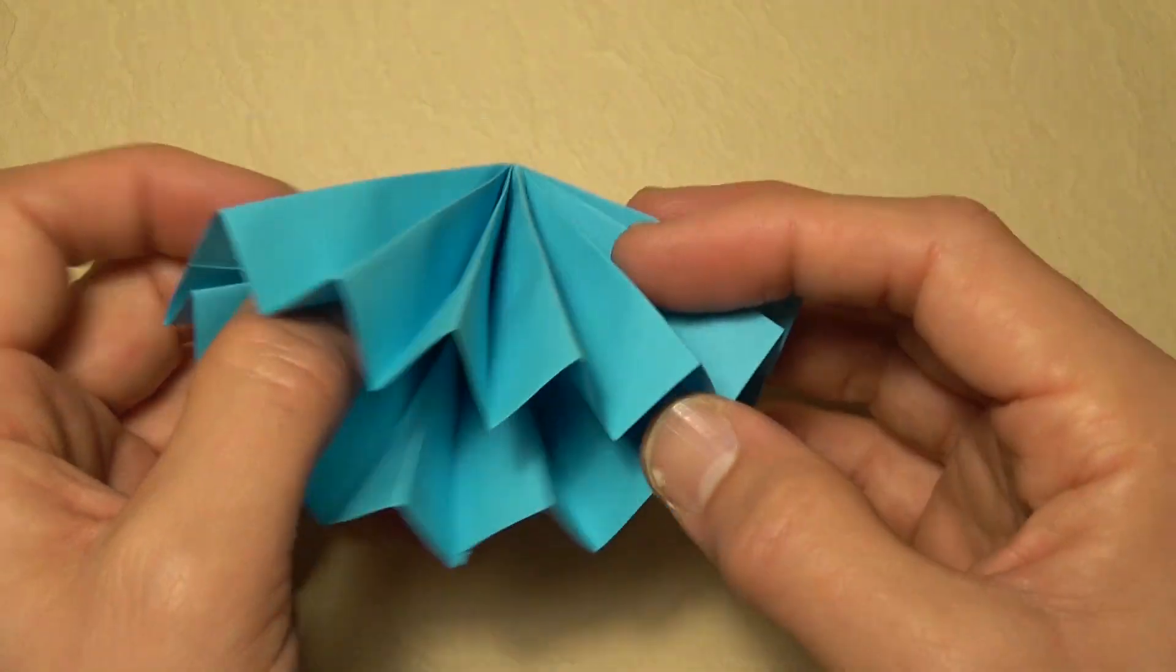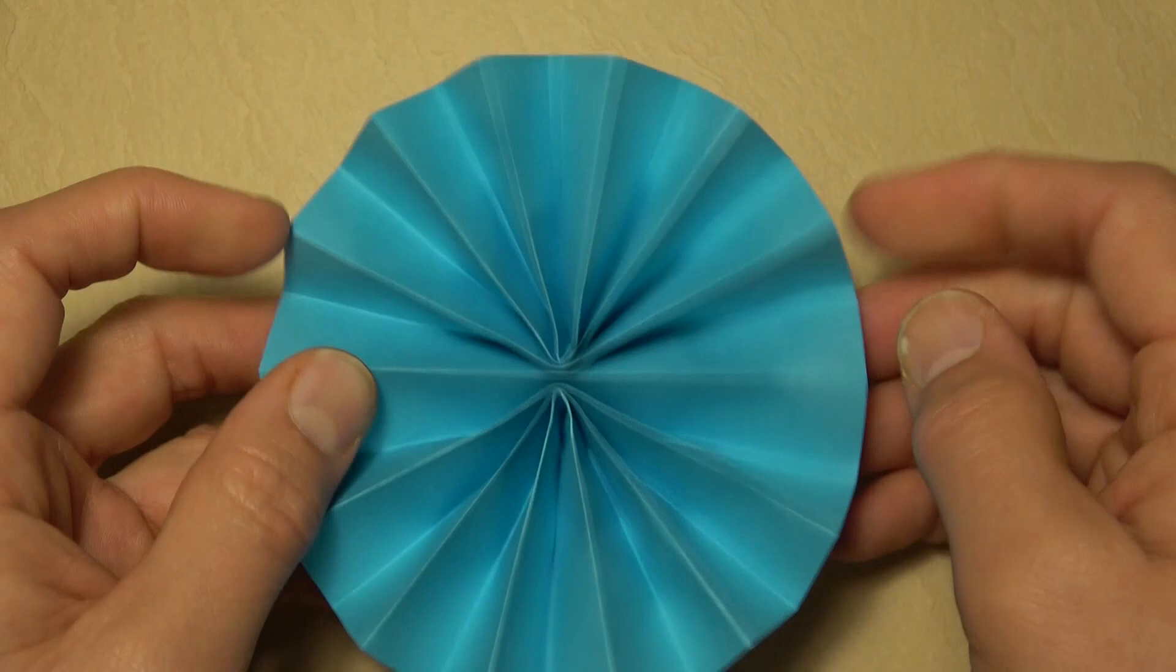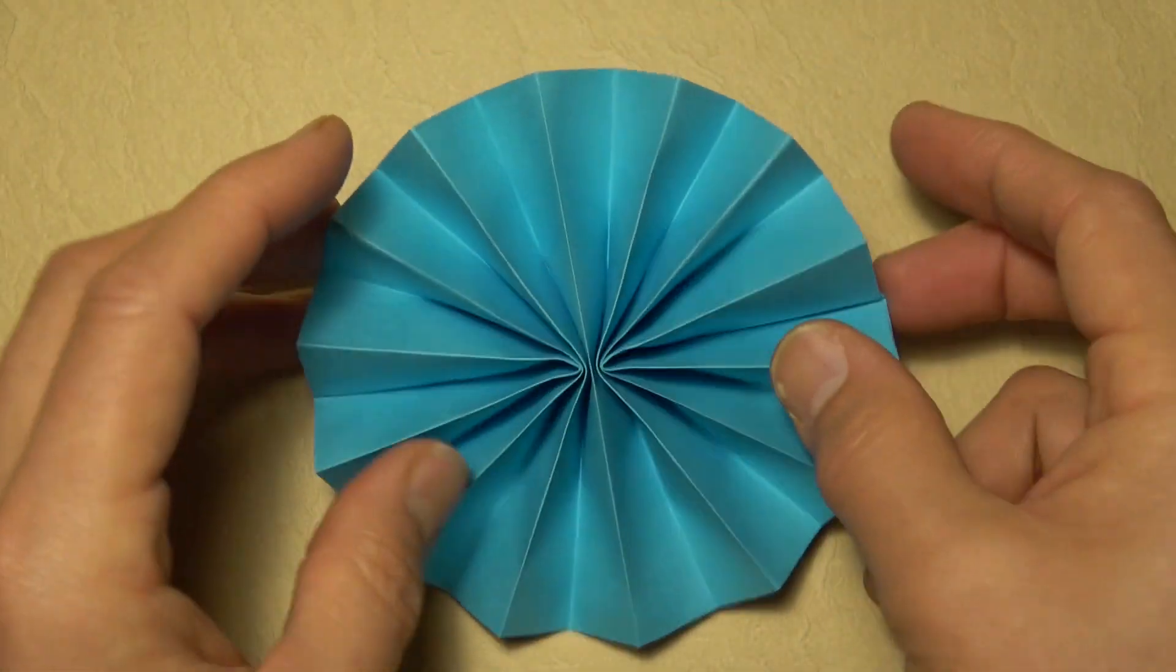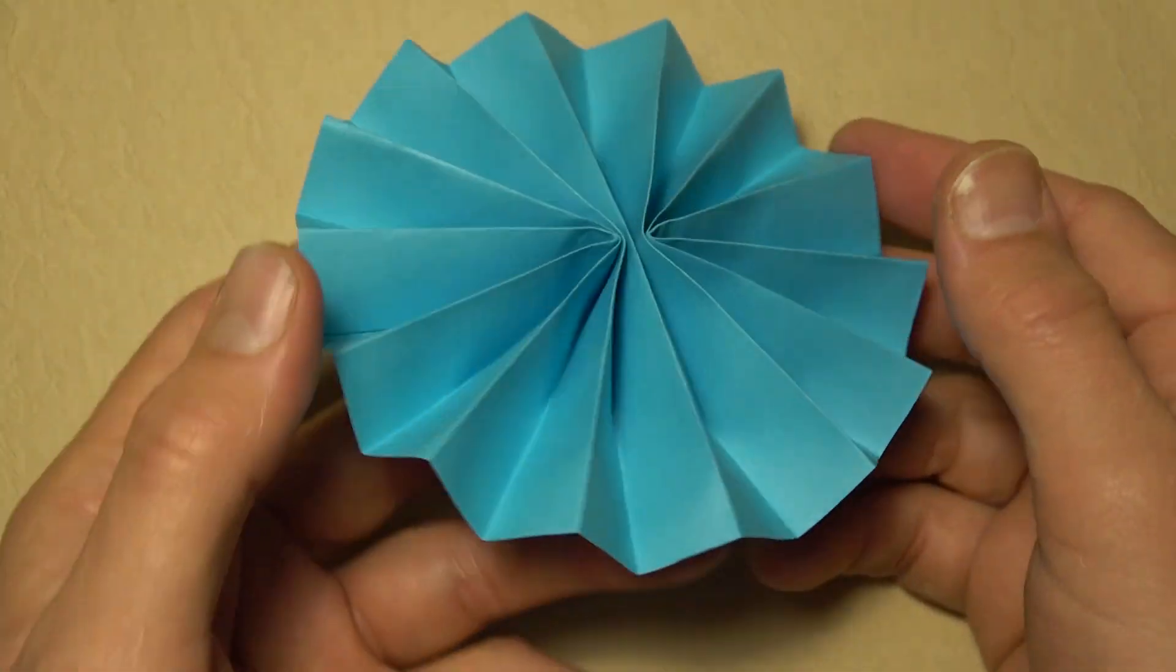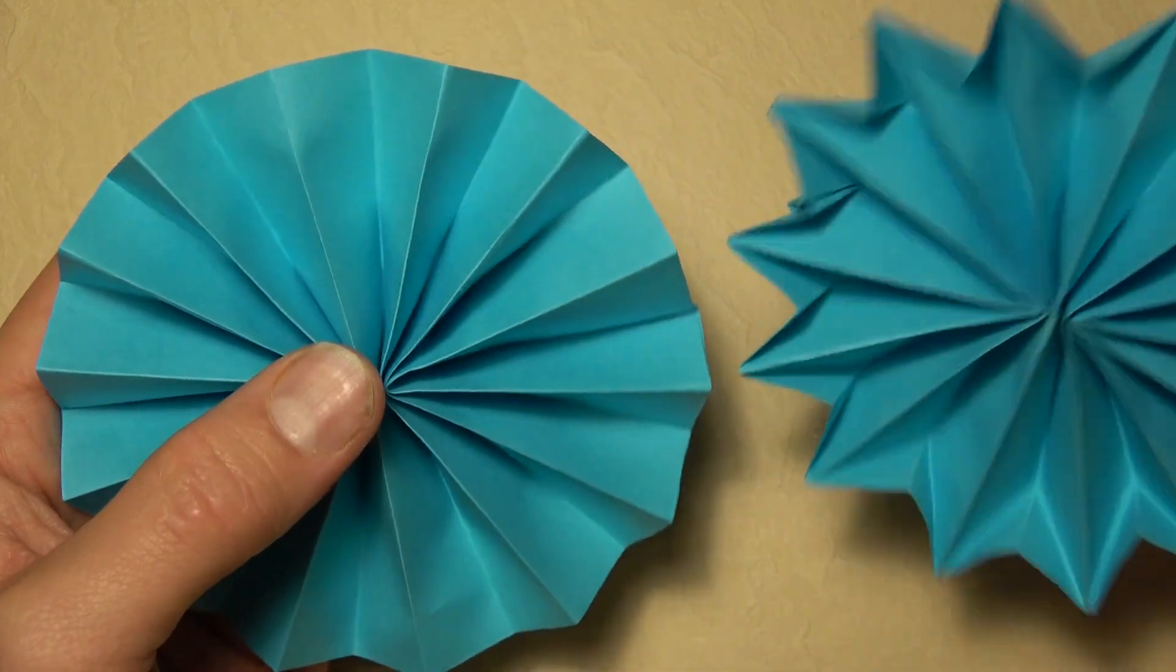And you can close it back up like that. And it spins a little bit. And it looks nice on this side too. Okay, so here we have the rosette. Now I'm going to show you how to put the reverse folds in. So that it looks like a star.